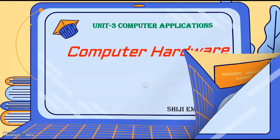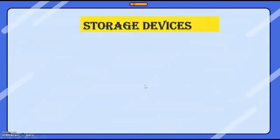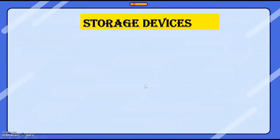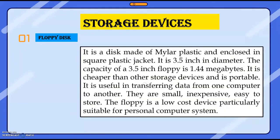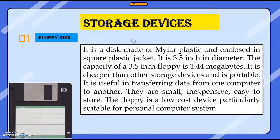We will learn so many hardware components in this chapter. We are going to learn the first category of computer hardware, that is storage devices. Storage devices are mainly the devices which are used to store data.